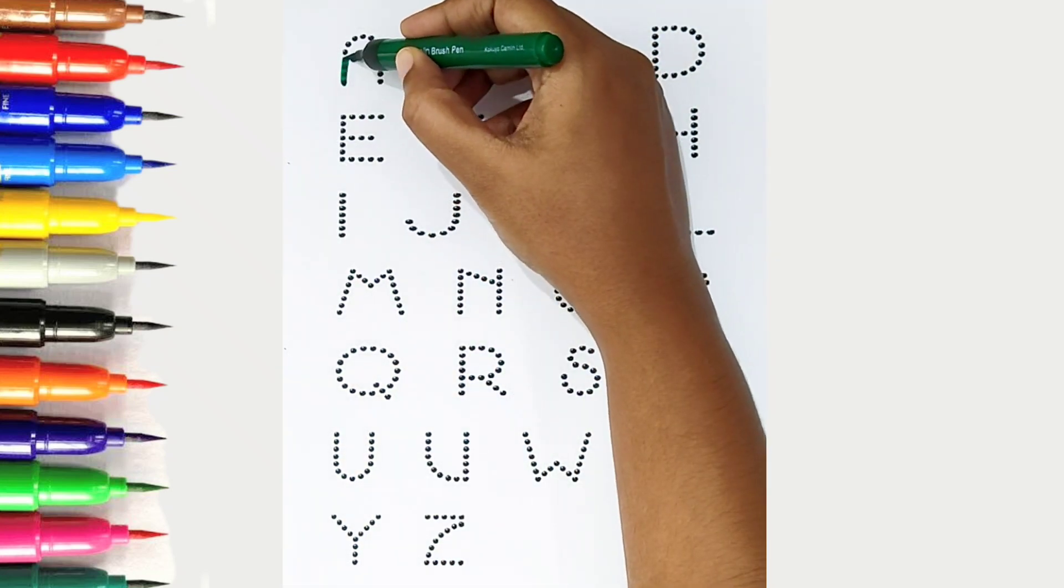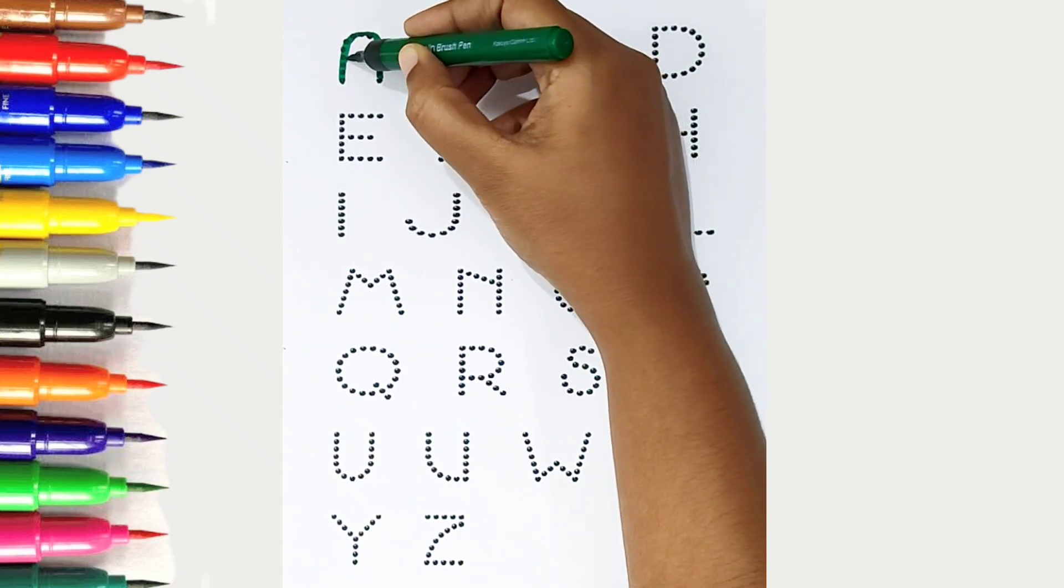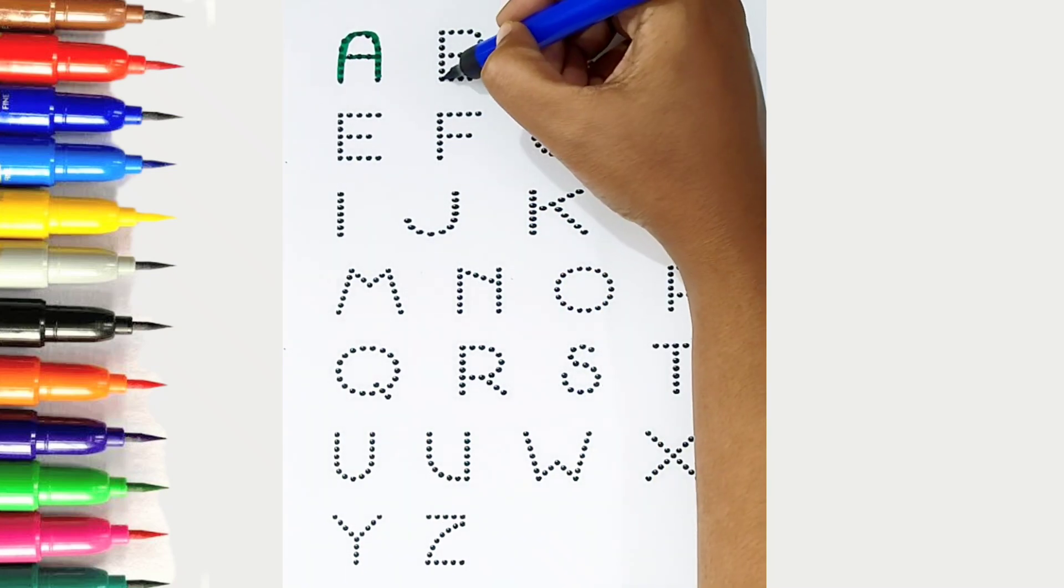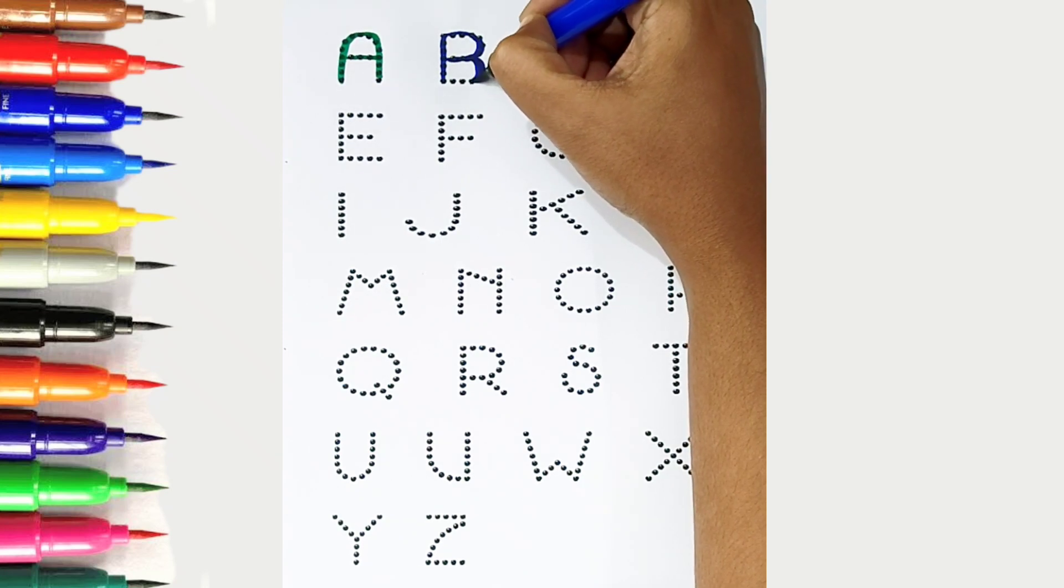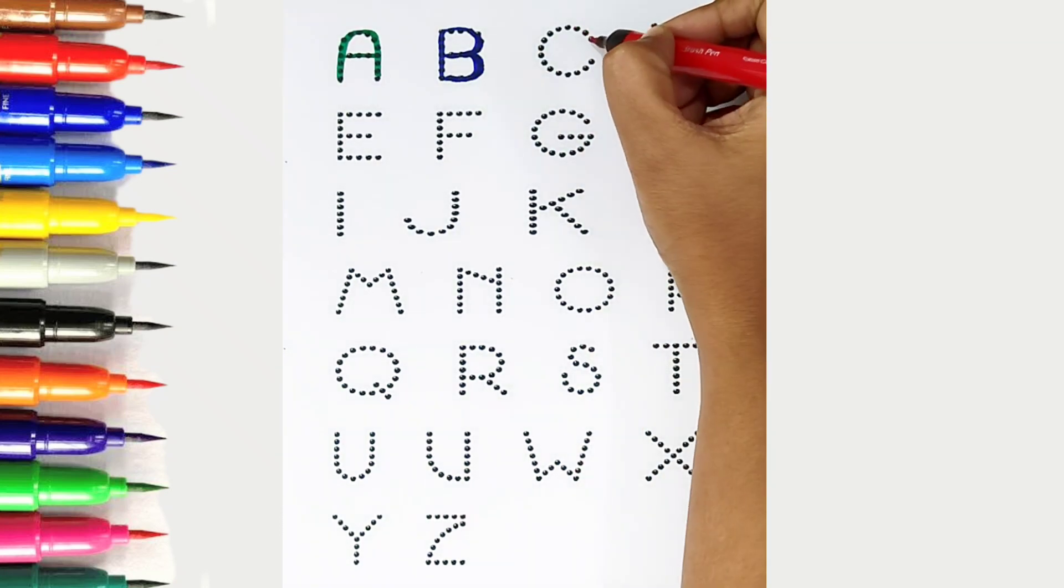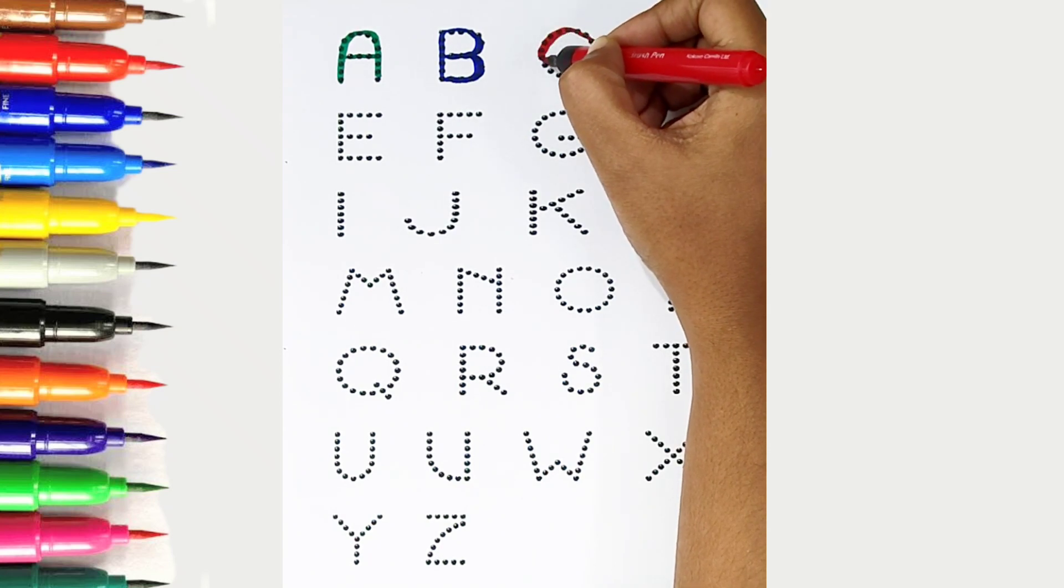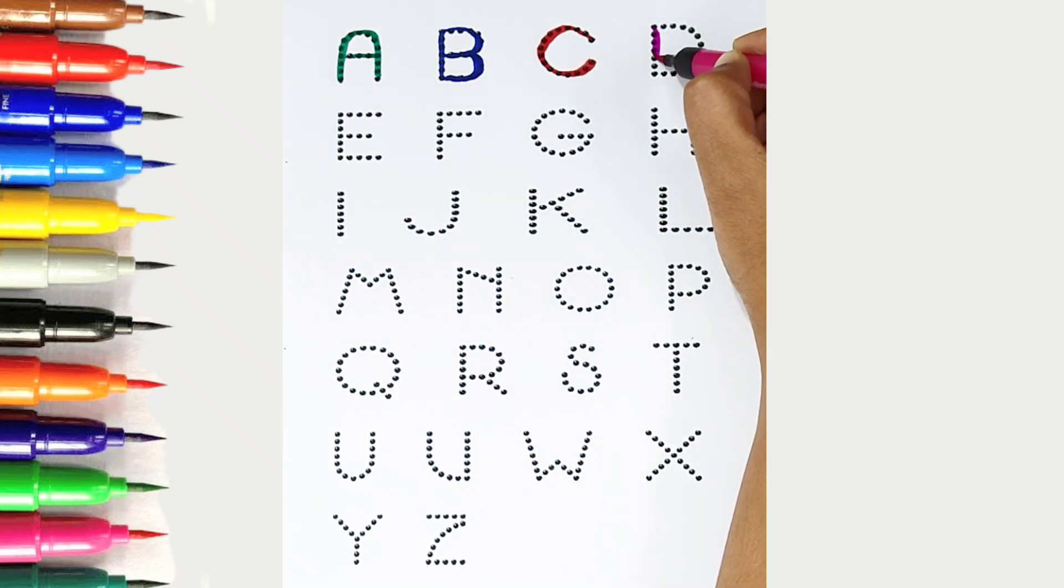A. Dark green color, A is for apple. B. Dark blue color, B is for ball. C. Red color, C is for cat. D. Pink color, D is for dog.